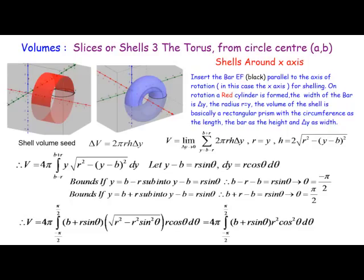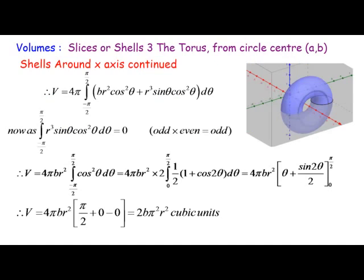If we let y − B = R sinθ, then dy = R cosθ dθ. We change the y-bounds to θ-bounds: the bottom is −π/2 and the top is π/2. Our integral turns into a more complex form, but we can simplify because cos²θ is even and sinθ is odd — the product of an odd and even function is odd. So the odd function integral from −π/2 to π/2 is zero.